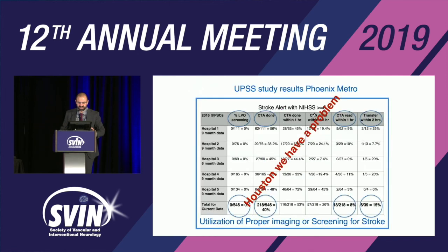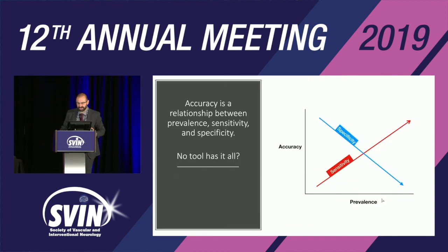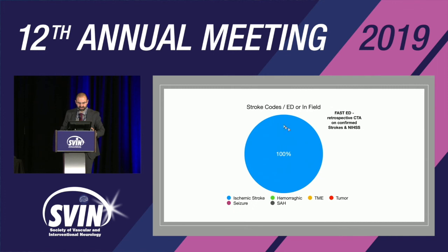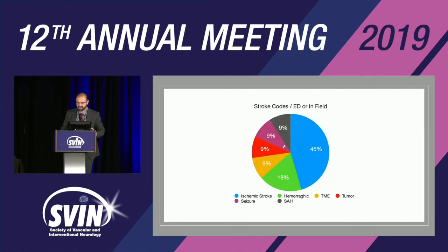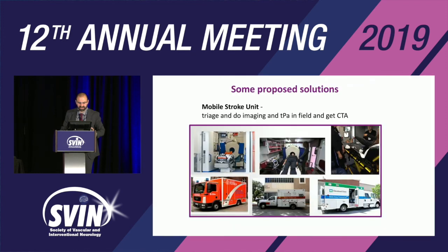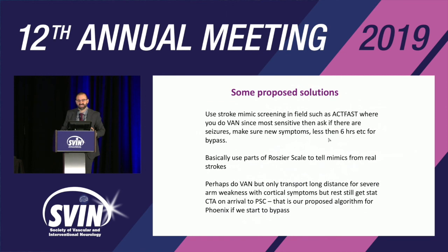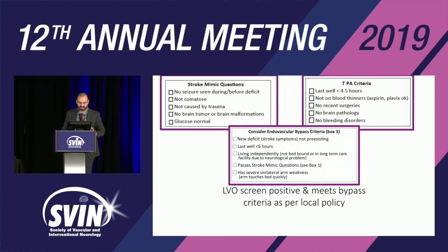One final point: if you bypass according to severity, patients are still not getting CTAs within one hour — transfer times are two to three hours or longer. In the field, the patient population includes tumors and stroke mimics, not 100% confirmed strokes as in databases. Proposed solutions include mobile stroke units, apps, and using stroke mimic screening questions so that bypass criteria require both severe weakness and passing the mimic questions.